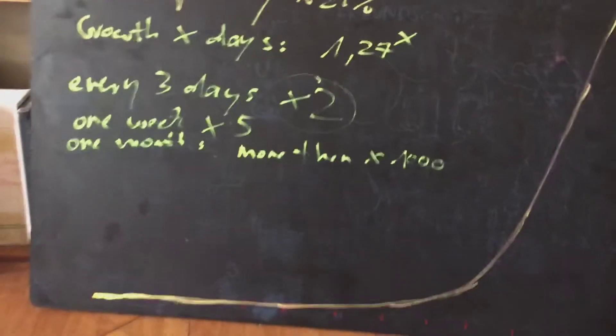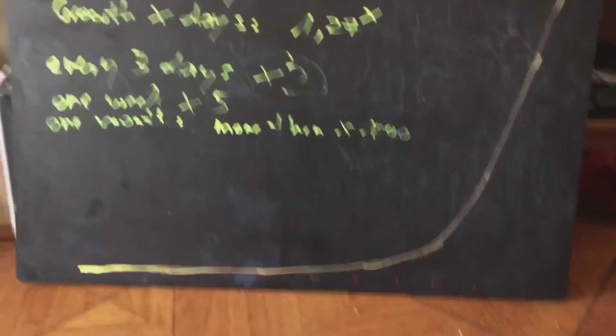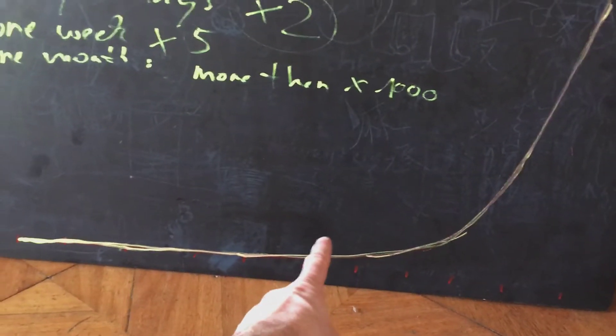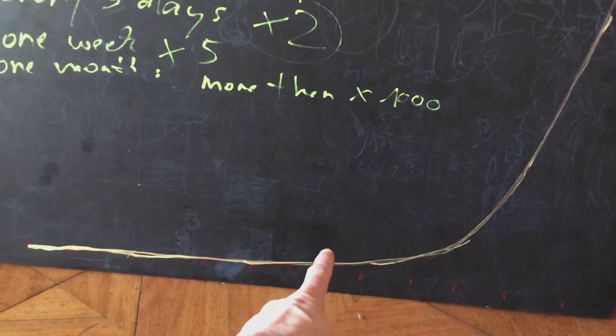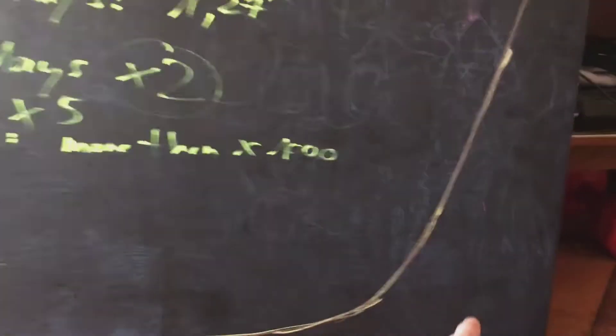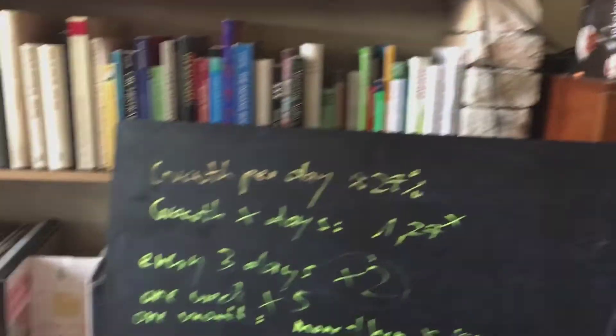What does it mean? I painted a picture here. This is the virus — the growth, this is the curve. It grows up very fast. So many people think we are now here, you know it's just a few cases, what's going on? But you will be here and very fast the curve will go through the roof.